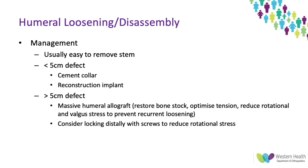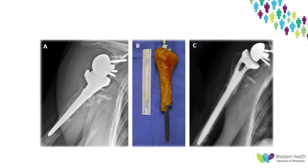In terms of management, a loose humeral stem is usually straightforward to remove for revision. For less than a five-centimeter defect in elderly patients, a cement collar can be utilized, or a proximal humeral replacement implant. For more than a five-centimeter defect, the options are a massive humeral allograft — which helps restore bone stock and optimize soft tissue tension to reduce rotational stresses — or an uncemented stem locked distally with screws. The picture shows a loose humeral stem with significant bone loss, a massive allograft with a step cut at the distal aspect to neutralize rotational stress, and the final implant with allograft.